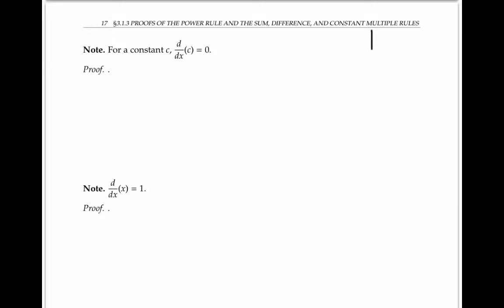It makes sense that the derivative of a constant real number has to be zero, because the slope of a horizontal line is zero.